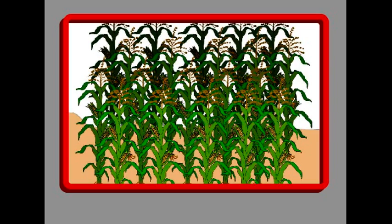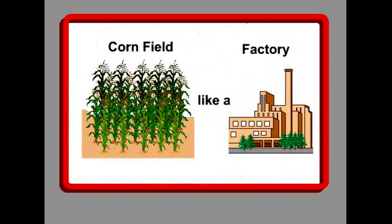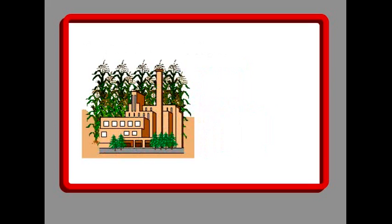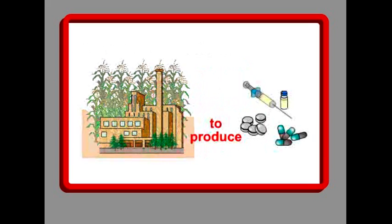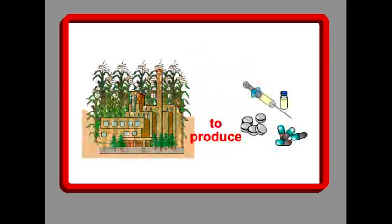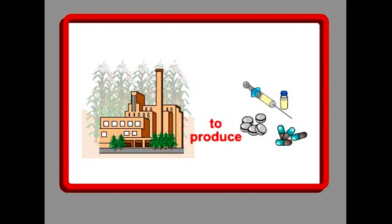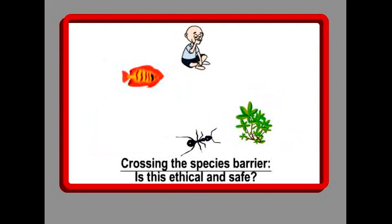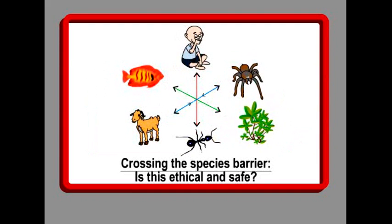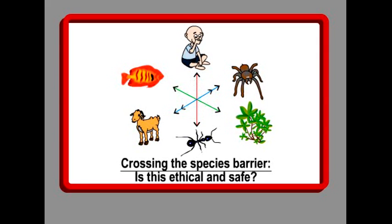Using plants as factories to make drugs is dangerous, as people who do not need these drugs may eat the plants, and this can be harmful to them. Even those who require the drugs produced in these plants may come to harm, as the levels of the drug in the plants might be wrong for them. Inserting human genes into plants, like in the case of Ventria rice, is crossing the species barrier. This has serious moral, ethical, religious, health, and scientific implications.